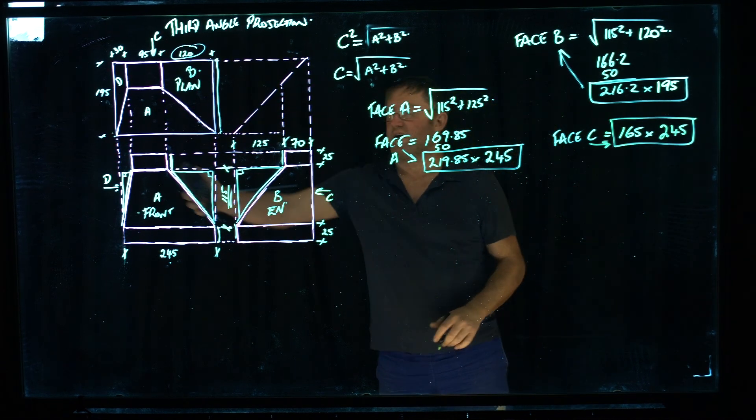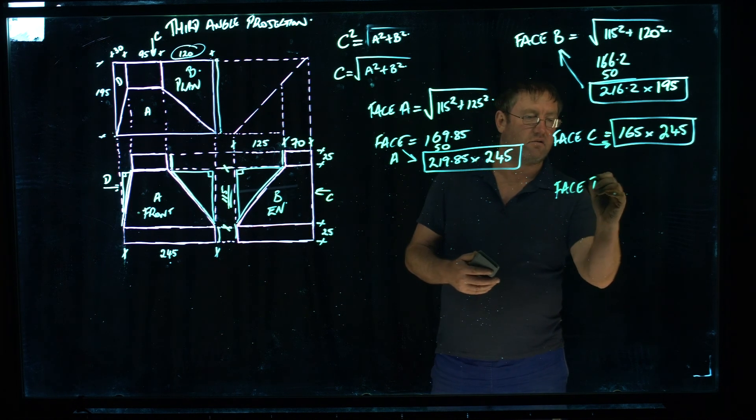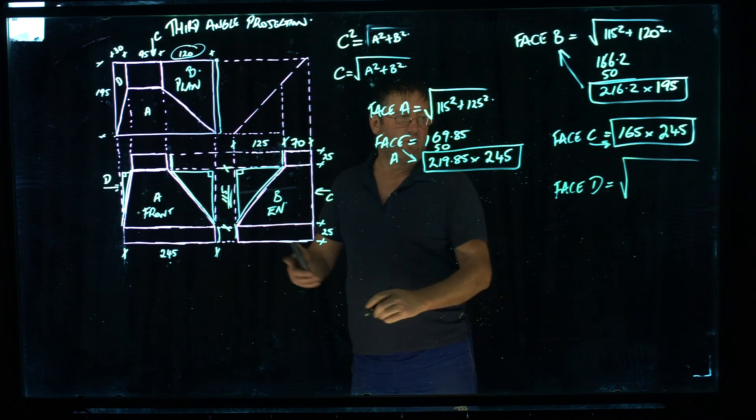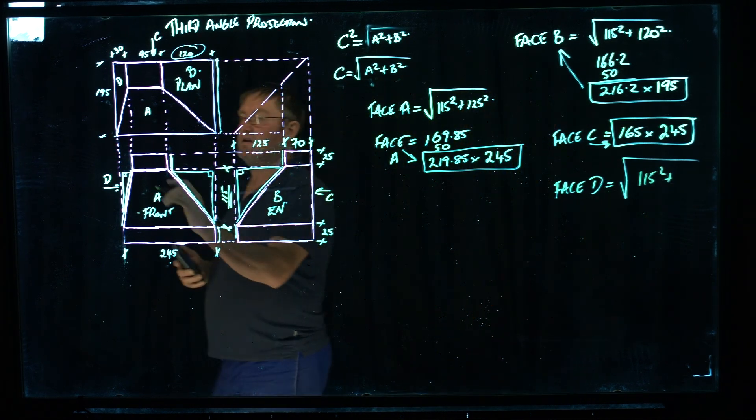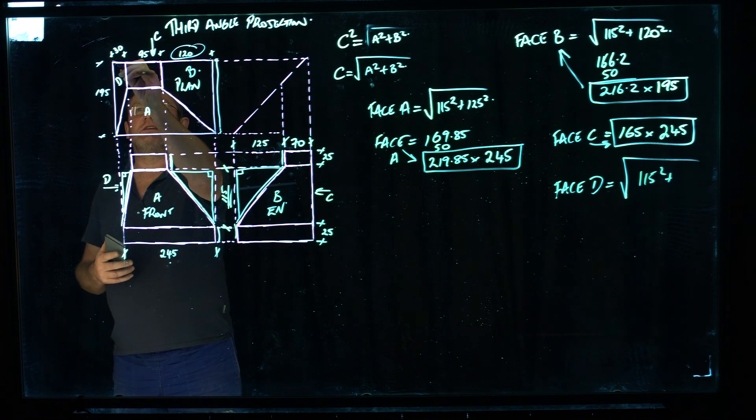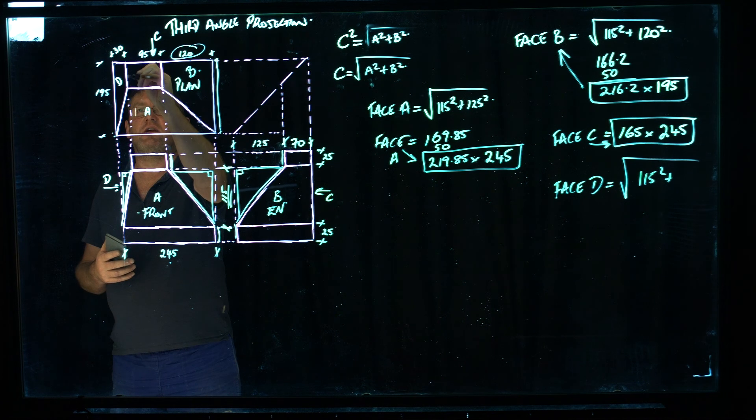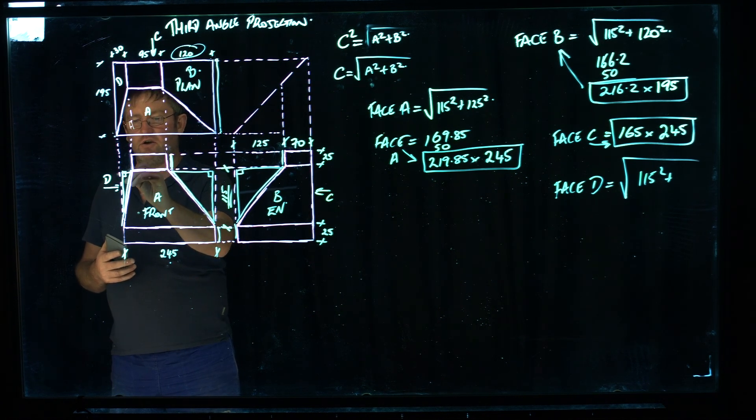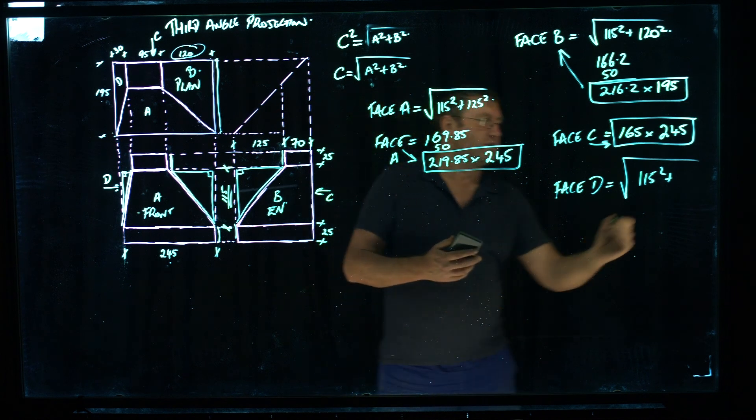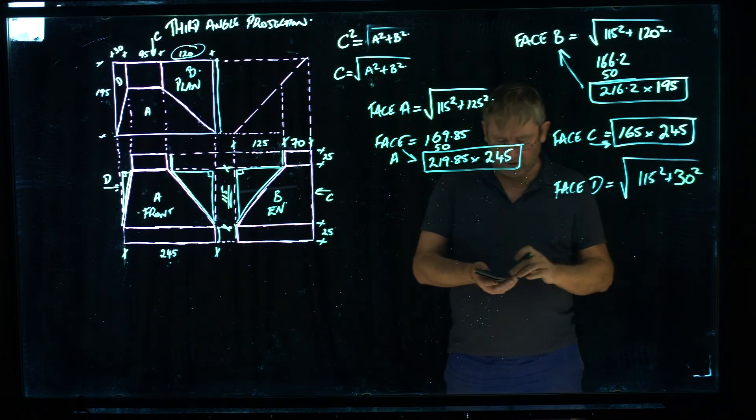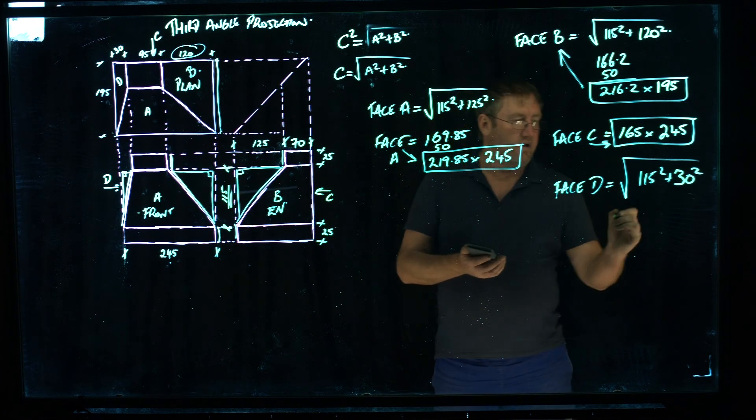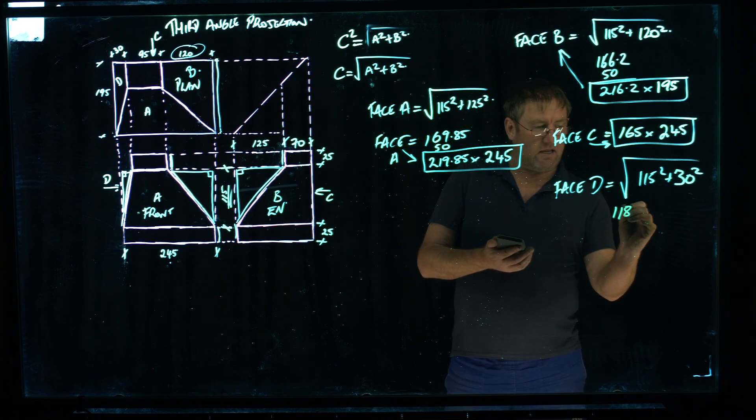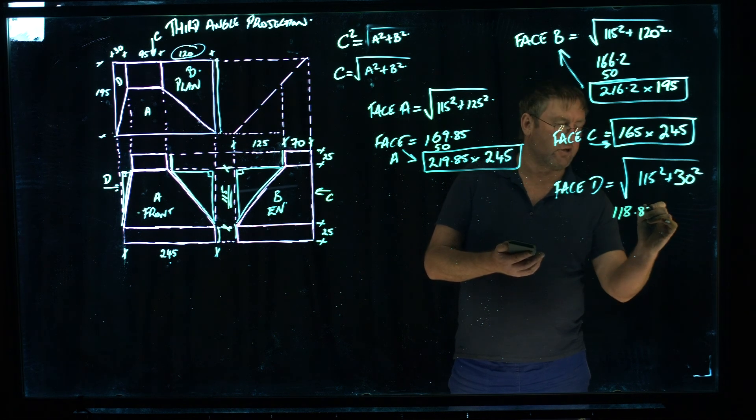Last one to do. Face D. Face D equals square root. Well, I've said that A is 115 squared. And face D is this face here. And from the outside edge into this point here where the neck on it is a 30mm offset. So this dimension is 30 and this is 115. So we've got 30 squared here. Do that on the calculator. Push the square root button. 115 squared plus 30 squared equals. Comes out at 118.848. So I'm just going to round that to 85.